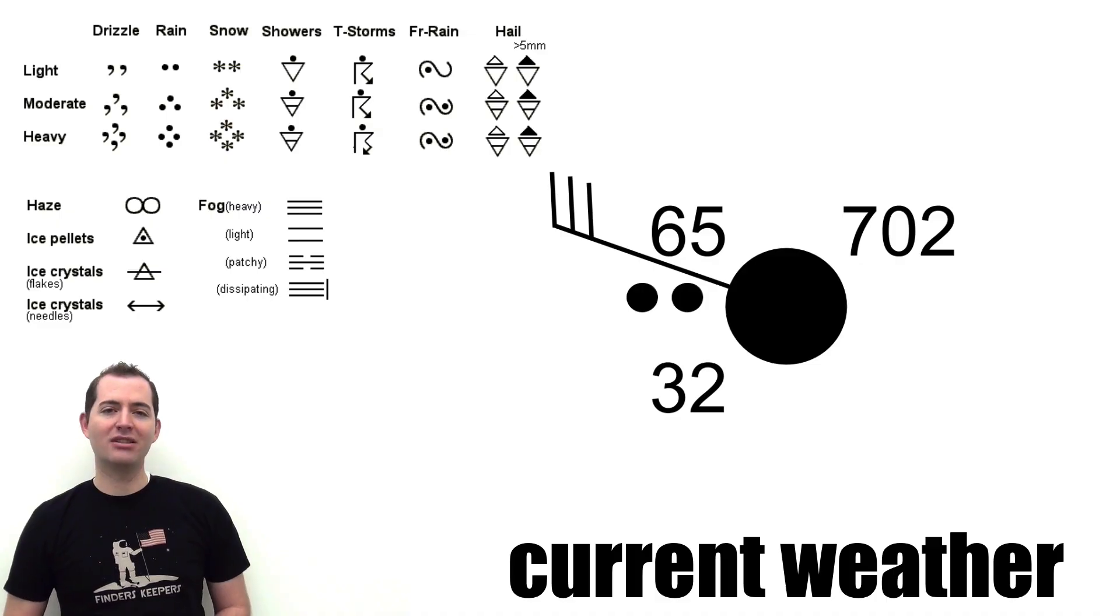Rain is represented by a small filled-in circle and can be shown with different symbols and in different arrangements to show different severities of rain. The same arrangements and symbols are used to show current snow conditions, but the small filled-in circle that represents rain is replaced by a symbol that looks like a snowflake.